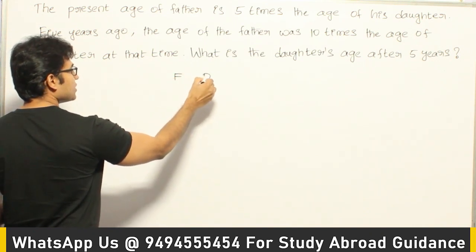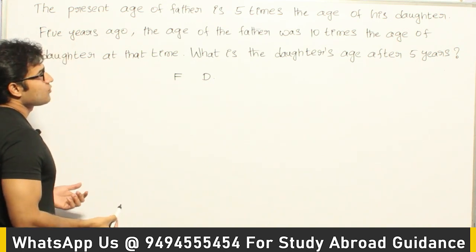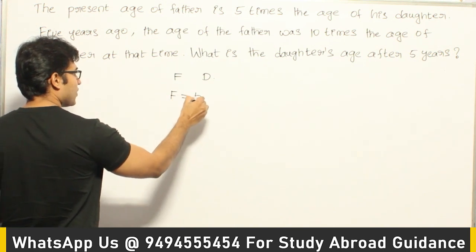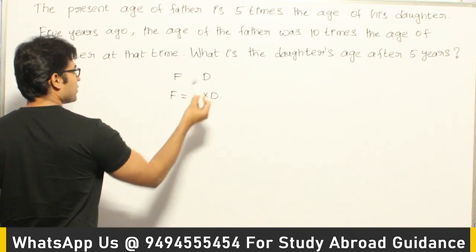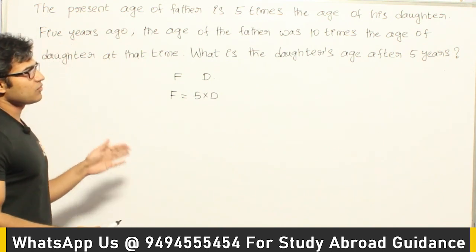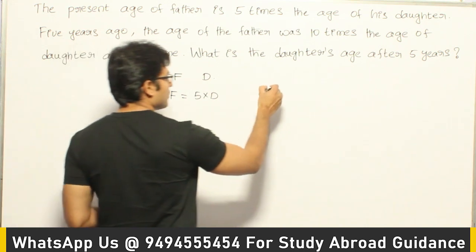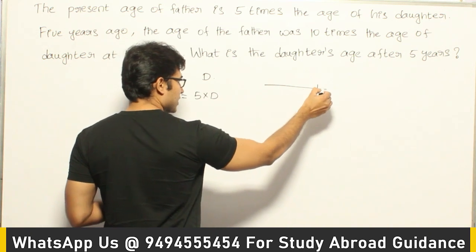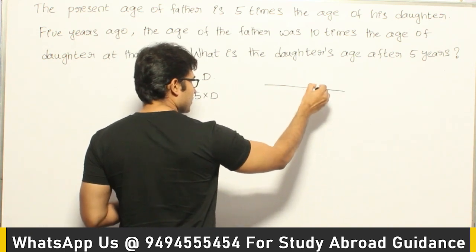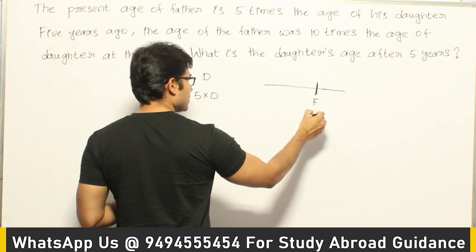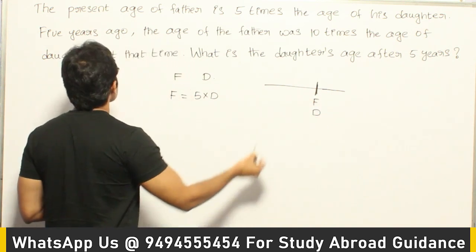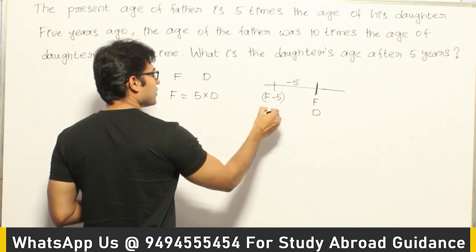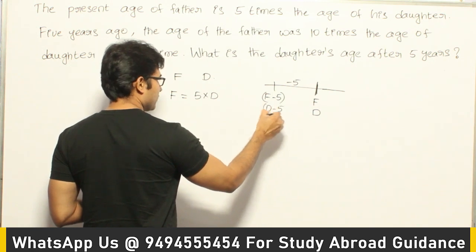They are saying that the present age of father is 5 times the age of his daughter, which means F = 5D. Now considering a timeline with the present marked, 5 years ago means minus 5. So the age of father will be F minus 5, and the age of daughter will be D minus 5 back then.